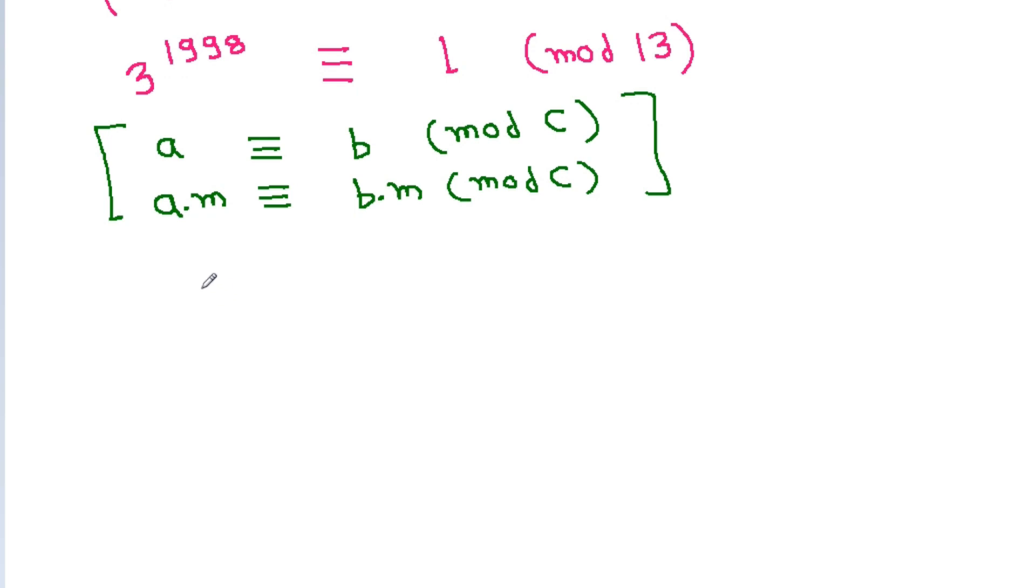So if we multiply both sides by 3 power 2, then 3 power 2 times 3 power 1998 is 3 power 2000, which is equivalent to 3 power 2 times 1 mod 13. And 9 times 1 is 9.